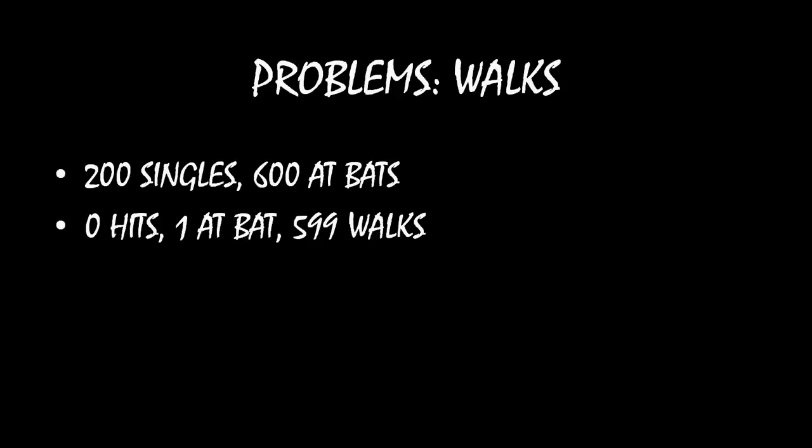The second problem is that batting average does not incorporate walks. Think about a player with 200 singles and 600 at-bats — that gives him a .333 batting average, which is very good. But compare that to a player with zero hits in a season, one at-bat, and 599 walks. That player at the bottom is arguably the best baseball player to ever live, despite having no hits and a batting average of zero. Walks are important — walks get you on base — and batting average does not account for that.